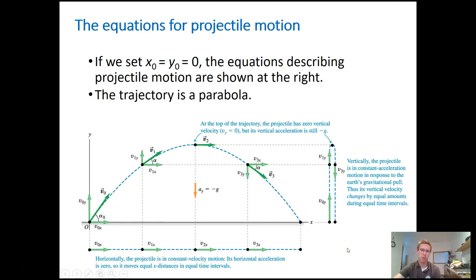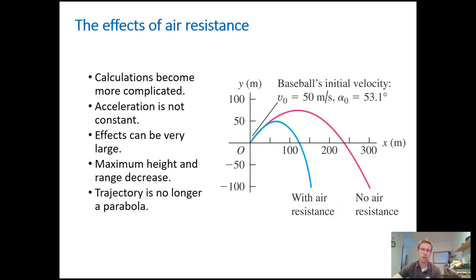We're going to work with projectile motion where things only accelerate due to gravity, and we're ignoring air resistance for now. We'll add the force of air resistance in chapter 5. For example, a baseball hit at something like 50 meters per second will experience significant air resistance, meaning if we ignore it, you might calculate a much higher range than the ball will actually travel.